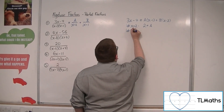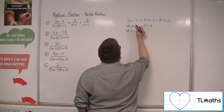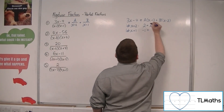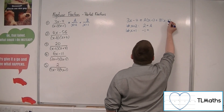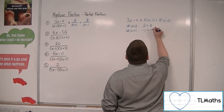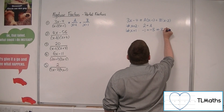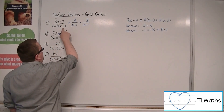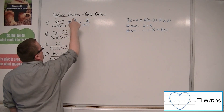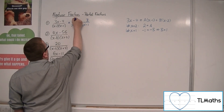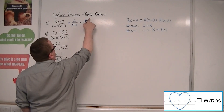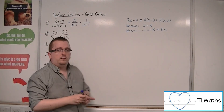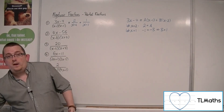If we let x be 1, we get 3 take away 4, so minus 1. That bracket gets knocked out. We've got 1 take away 2, so minus 1, meaning minus B. So B must be 1. Therefore we can write (3x - 4) over (x - 2)(x - 1) as 2/(x - 2) plus 1/(x - 1).